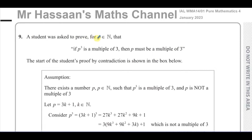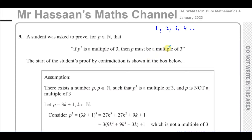A student is asked to prove: for P being an element of the natural numbers — the numbers you count with starting from 1, 2, 3, 4, all the positive integers, not including 0 — if P cubed is a multiple of 3, then P must also be a multiple of 3.